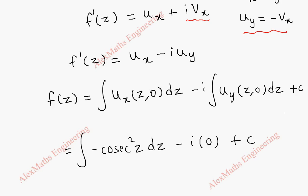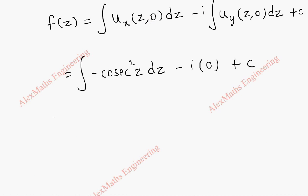And we have a constant c. So f of z will be minus cosecant square integration is cot z plus c. Thus we got the analytic function f of z.